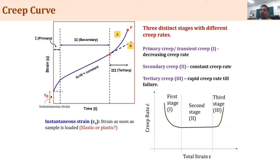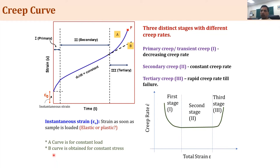There are two curves shown: curve A for constant load and curve B for constant stress. In stage 1 and stage 2 they are the same, but they differ in the tertiary stage. Under constant load, the stress keeps increasing as the cross-section decreases, leading to faster failure. Under constant stress, it follows the secondary stage strain rate a little longer before internally failure begins. The material can only be used safely up to the onset of tertiary creep.